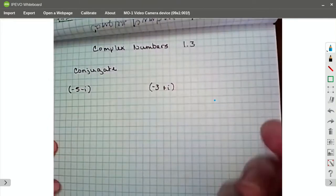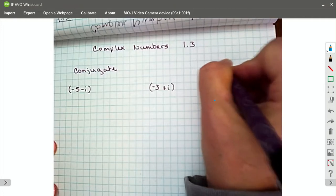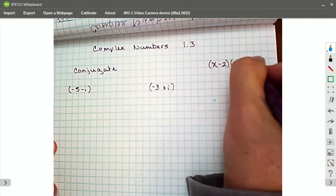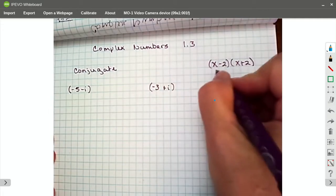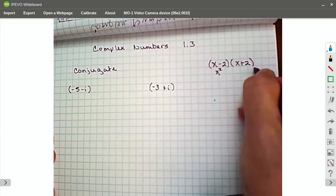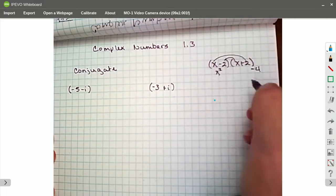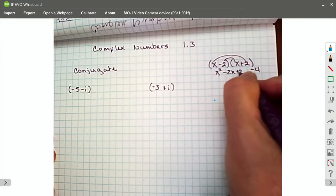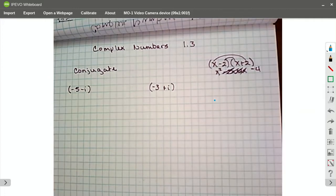This is based on, remember what happens when you have the difference of perfect squares, like if you had x minus 2 and x plus 2. Remember when you foiled those out, you got your x squared in the front and your negative 4 in the back. But what happened to those two middle terms? They canceled, right? You had a negative 2x and a positive 2x, and they always canceled each other out.